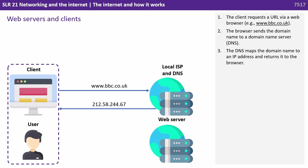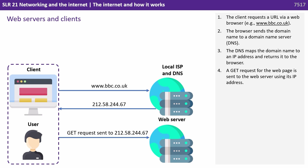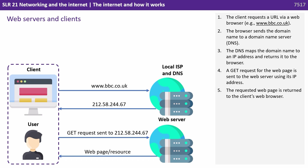The domain name server maps the domain name to an IP address and returns it to the browser. A GET request for the web page is sent to the web server using its IP address. The requested web page is then returned to the client's web browser.